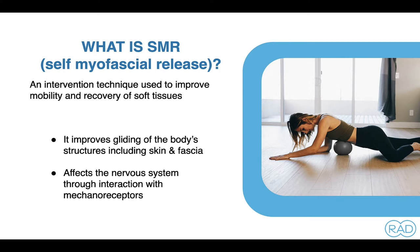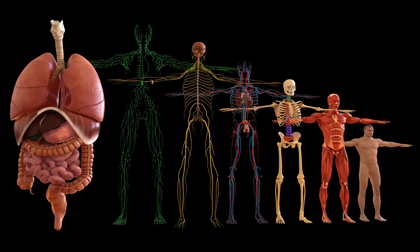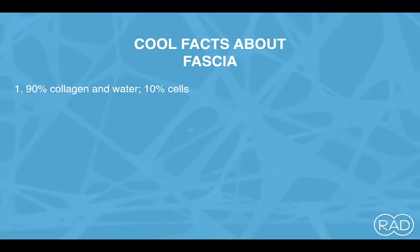First of all, myo means muscle, and fascial obviously means fascia. SMR is an intervention technique used to improve mobility and recovery of soft tissues. It's a very general definition, but it really does have a large impact on our nervous system through mechanoreceptors. Here are some cool facts about fascia from the Fascia Research Society, which you can find online — it's a great resource.